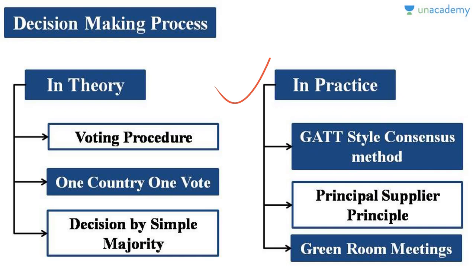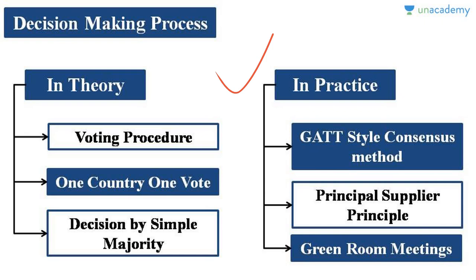Another principle used for decision-making is called the principal supplier principle. Suppose India wants to decide how much tariff to put on imports of oil — India will negotiate directly with the principal supplier, for example Saudi Arabia. Whatever decision comes out of that negotiation, India will apply it for all countries from which it can potentially import oil. That is called the principal supplier principle.